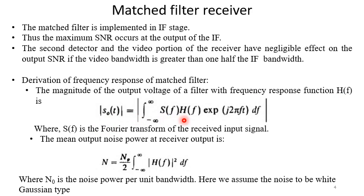|s_0(t)| equal to |∫S(f)H(f) exp(j2πft) df|. Where S(f) is the Fourier transform of the received input signal. The mean output noise power at the output receiver output can be written as N equal to N_0/2 integration |H(f)|² df.